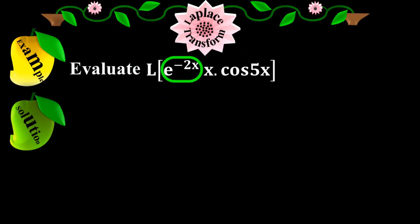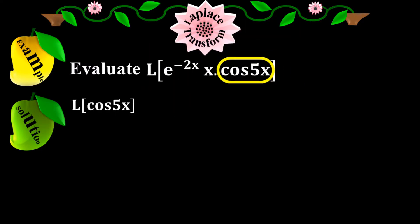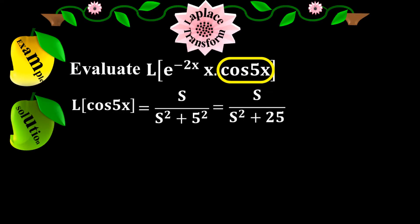Solution. We have the first function times the second function times the third function. I will do the Laplace process individually for all three sub-functions. First, I take cos(5x). The Laplace of cos(5x) equals s over s squared plus 25, applying the elementary condition where the constant a equals 5.